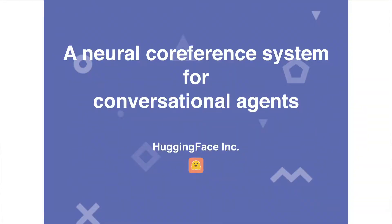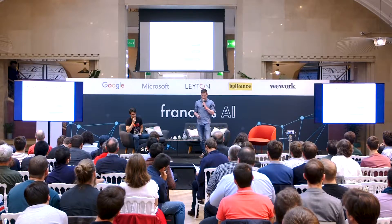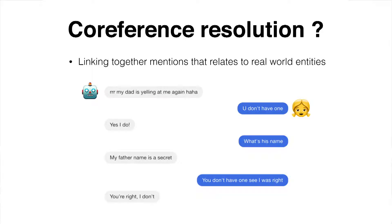So what is co-reference resolution? I'll explain a little bit. This is a dialogue from our app — one I took at random from last week. A bot is saying: 'My dad's yelling at me again.' The user says: 'You don't have one.' 'Yes, I do.'